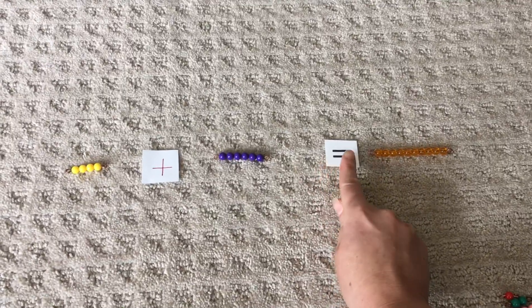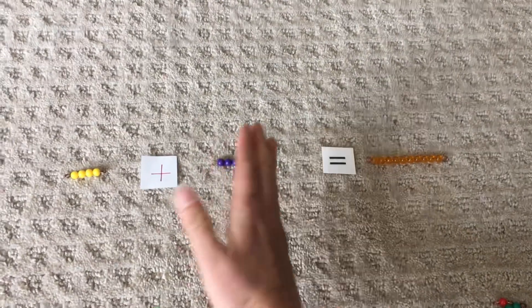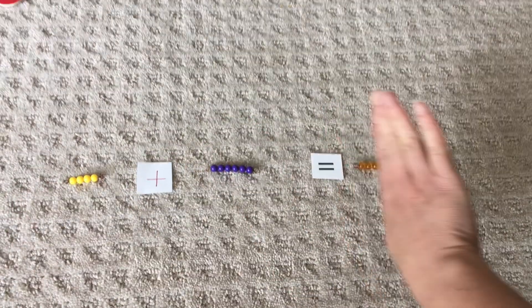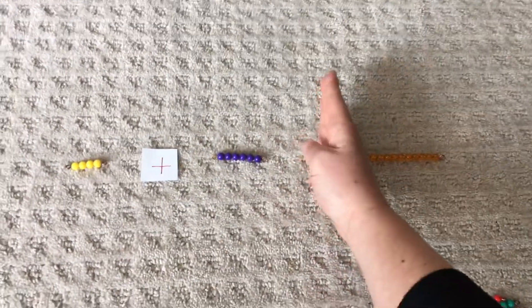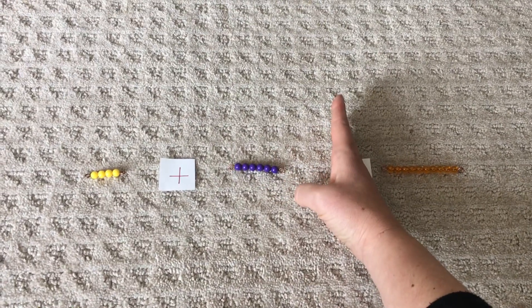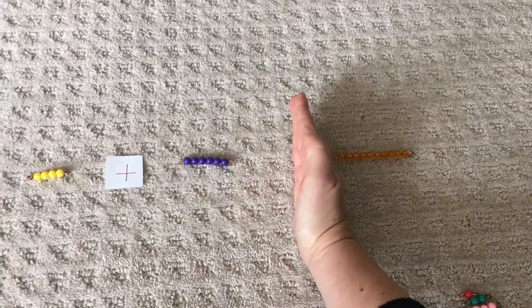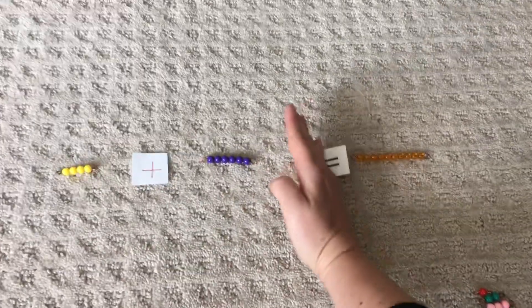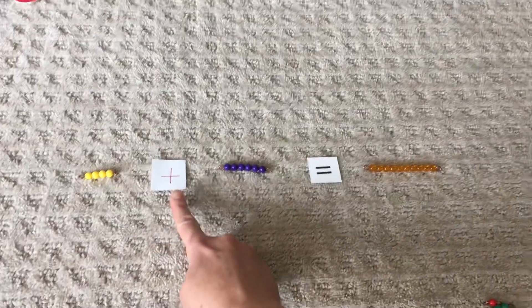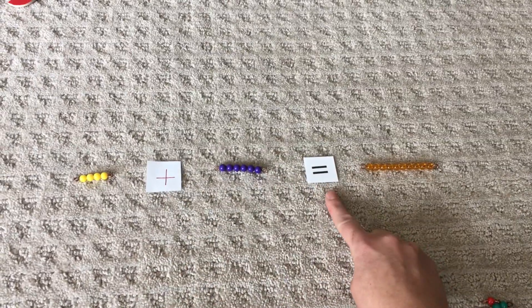This number means equals. It means there's the same on this side as there is on this side. So if you put a line here, there's ten beads over there, even though they're separated, and there's ten beads over there. They're the same. Okay. So that's our equal sign, plus sign, equal sign.